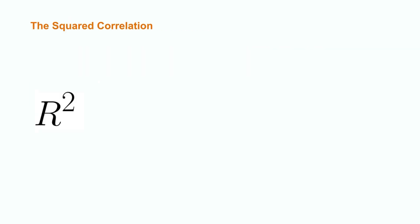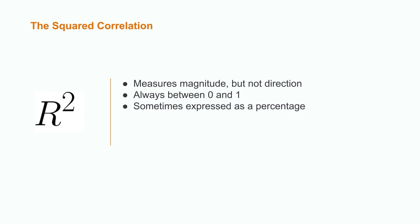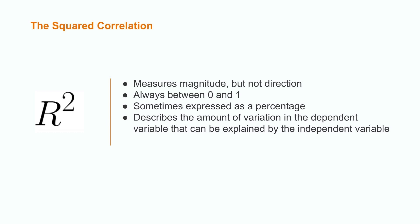The squared value of the correlation coefficient, denoted by r squared, is used to measure the strength of a linear relationship but not the direction. R squared can be written in both capital and lowercase letters. R squared is always between 0 and 1. However, it can sometimes be expressed as a percentage between 0% and 100%. R squared is also used to describe the amount of variation in the dependent variable that the independent variable is responsible for. In other words, if height is our independent variable and weight is our dependent variable, an r squared value of 0.56 would indicate that 56% of the variation in one's weight can be explained by their height. The value of r squared can be calculated by simply squaring the value of r.